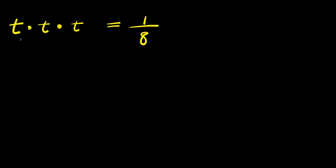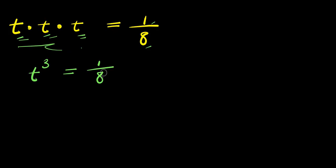Hello. How do you solve t times t times t equals 1 divided by 8? Let's multiply this out from the left hand side — we have t times t times t, that is t to the power of 3, and this equals 1 divided by 8.